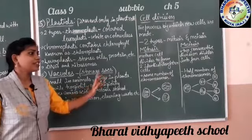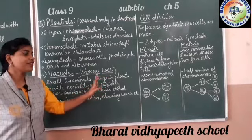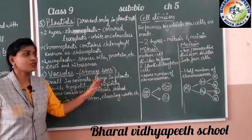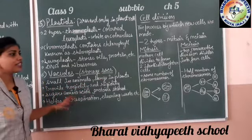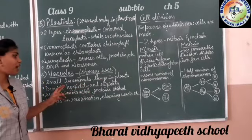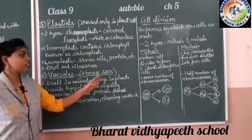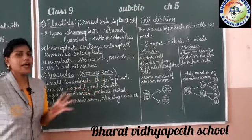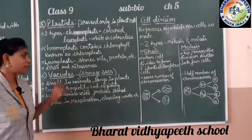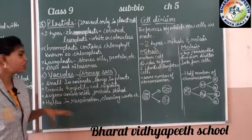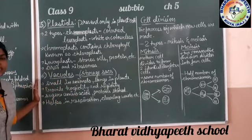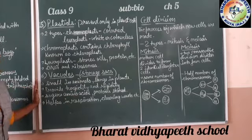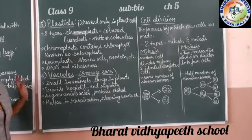Next is vacuoles. Vacuoles are empty areas — empty spaces used for storage. They are also known as storage sacs. Vacuoles are found in both animals and plants, but in animals vacuoles are found in a small size compared to plants. Plants consist of larger size vacuoles.